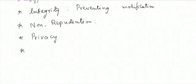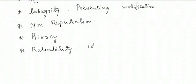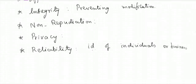The next dimension is reliability. Reliability means providing correct identification of the individual or business. It is going to give the correct ID of individuals or the business. That is your reliability.